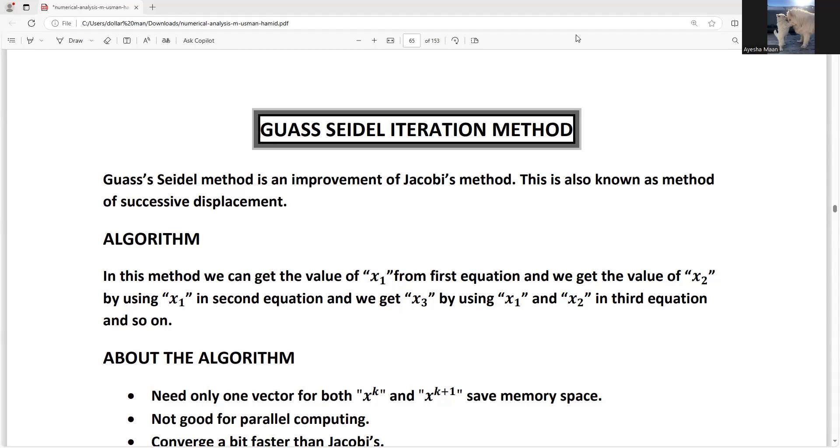In the previous lecture, we discussed the Jacobi Method and its mathematics and coding. In today's lecture, we will discuss the Gauss Seidel Iteration Method and what happens after coding. Gauss Seidel Method is an improvement of Jacobi Method.